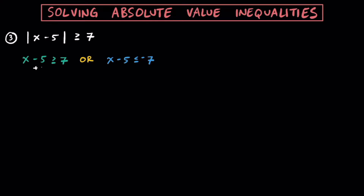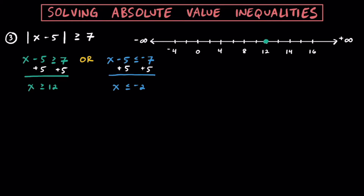To solve, we add 5 to both sides using the addition property of inequality. We get X is greater than or equal to positive 12. For the inequality to the right, adding 5 to both sides similarly, we find X is less than or equal to negative 2. Now let's graph it. To show X can be greater than or equal to 12, put a closed circle on 12 and point to the right. For X less than or equal to negative 2, put a closed circle on negative 2 and point to the left. When we have a greater than symbol, we always get this OR situation with arrows going in opposite directions.